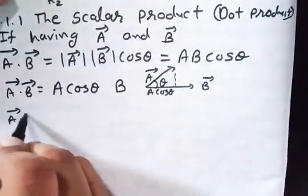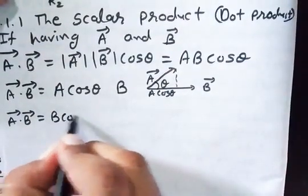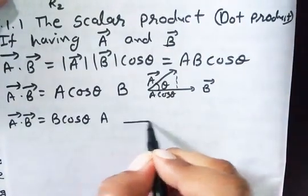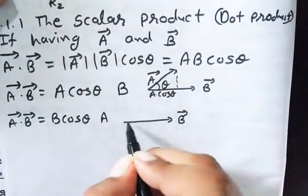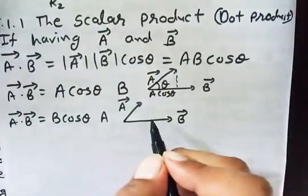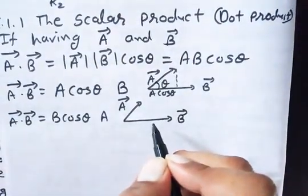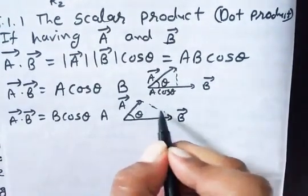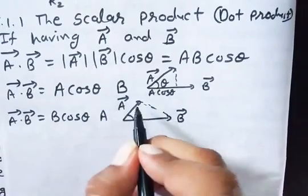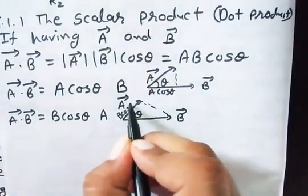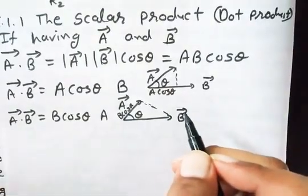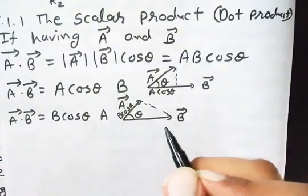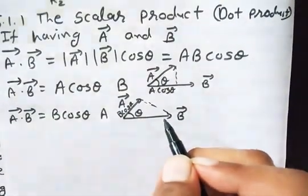Similarly, if I'm writing vector A dot vector B equals B cos theta into A, then here my vector B is in this direction, my vector A is in this direction. So here the projection of B on A will be taken. If we take the projection of B on A, then this becomes B cos theta, so this formula is correct for this method.